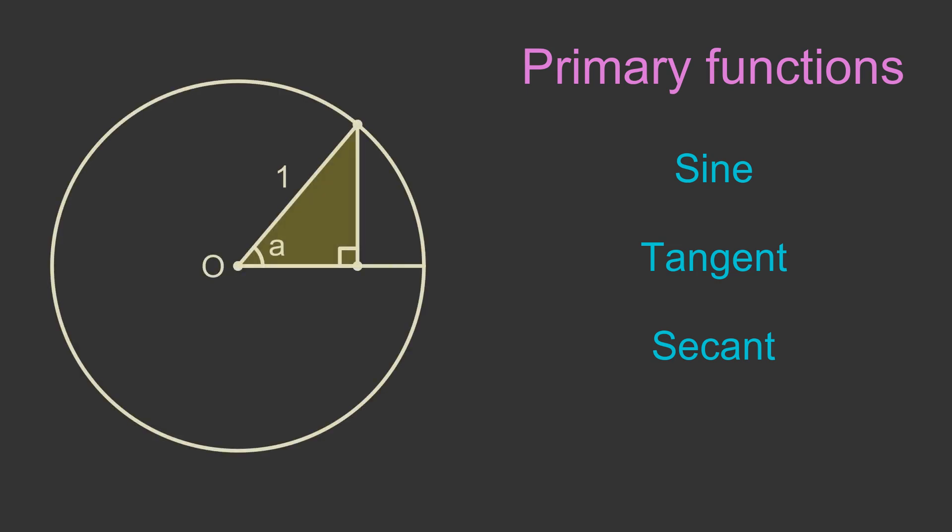If we form a triangle inside a unit circle with angle A at the centre, then the sine, tangent and secant functions will tell us the length of each of the three sides in terms of the angle A. Each function is named after the side it relates to.